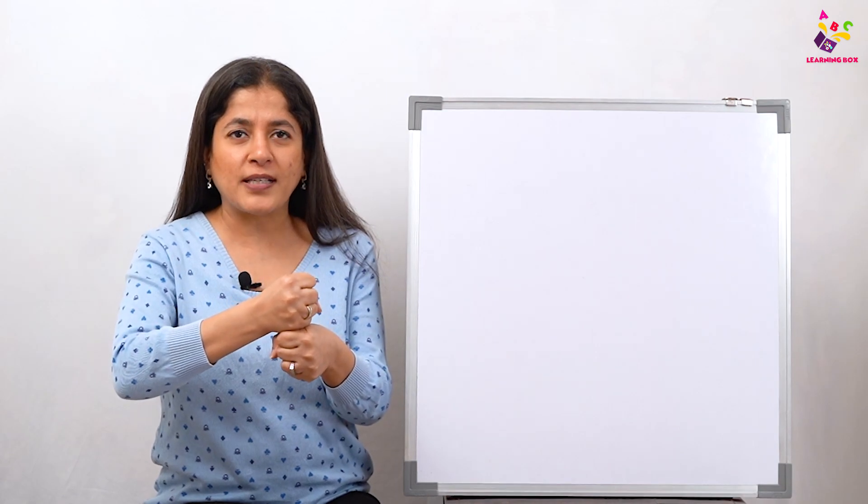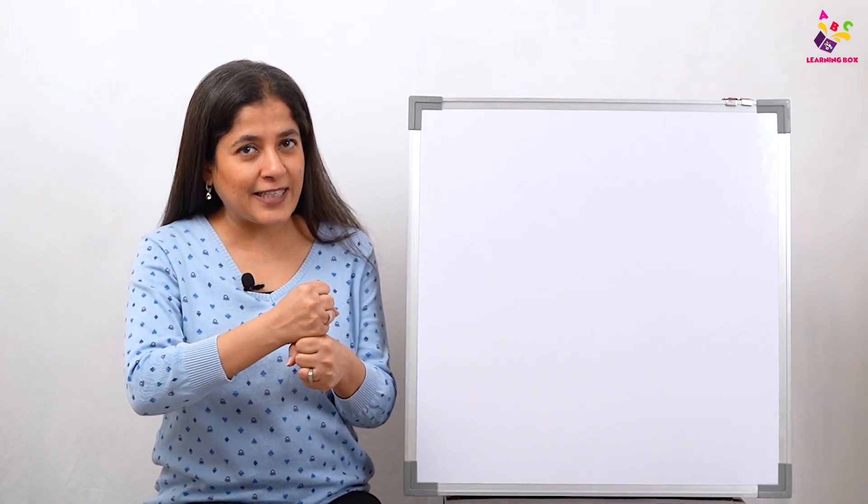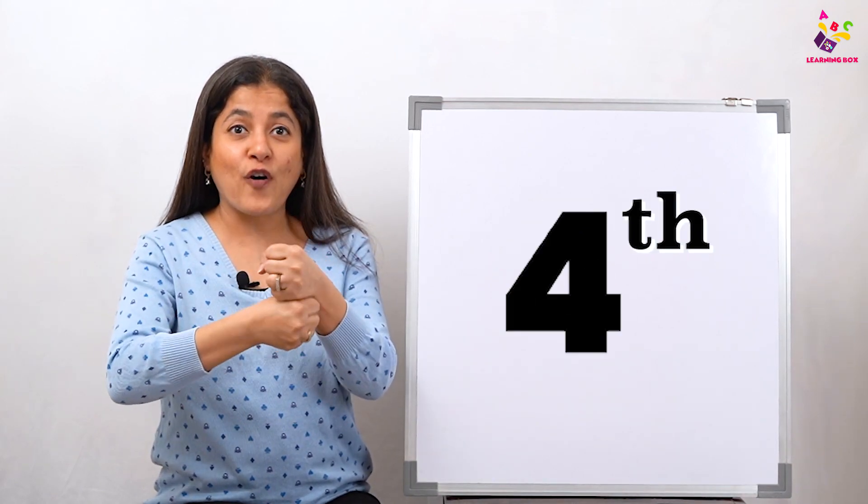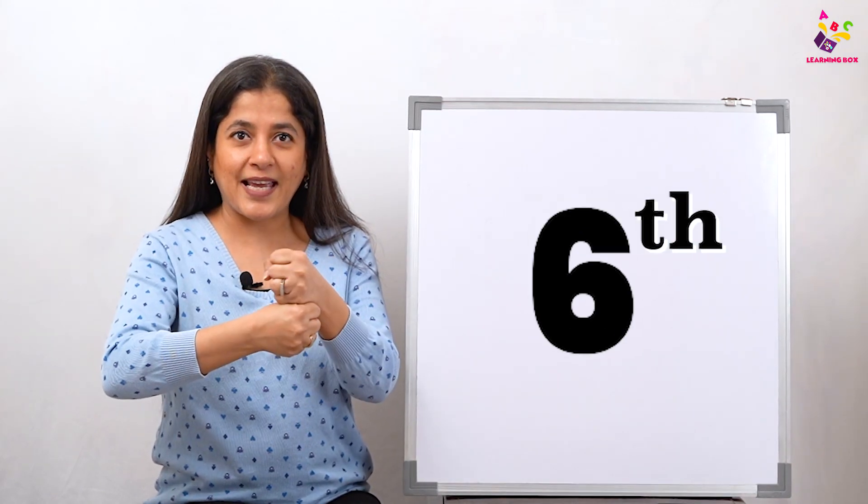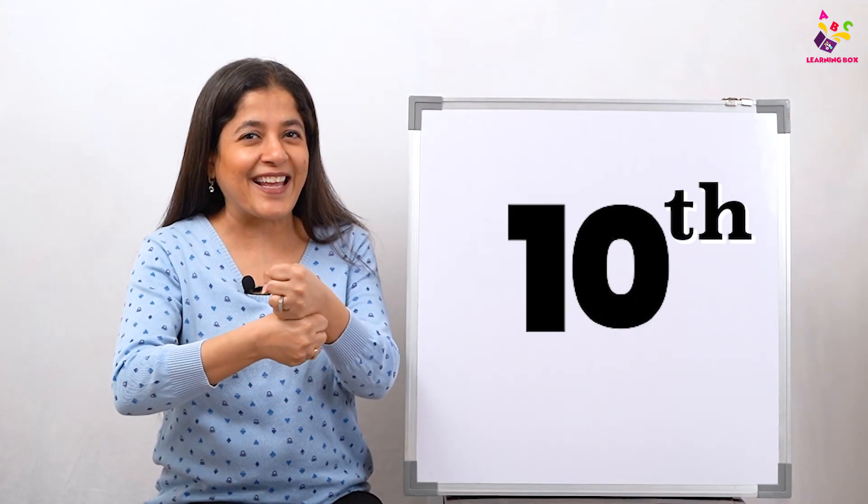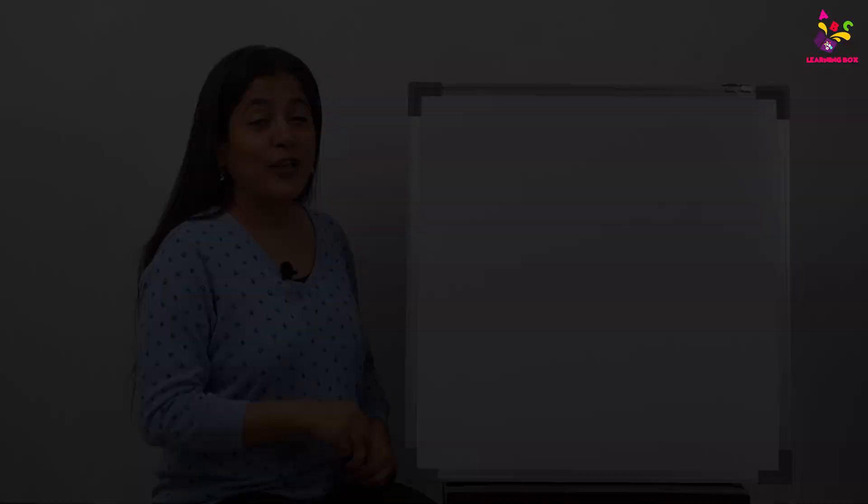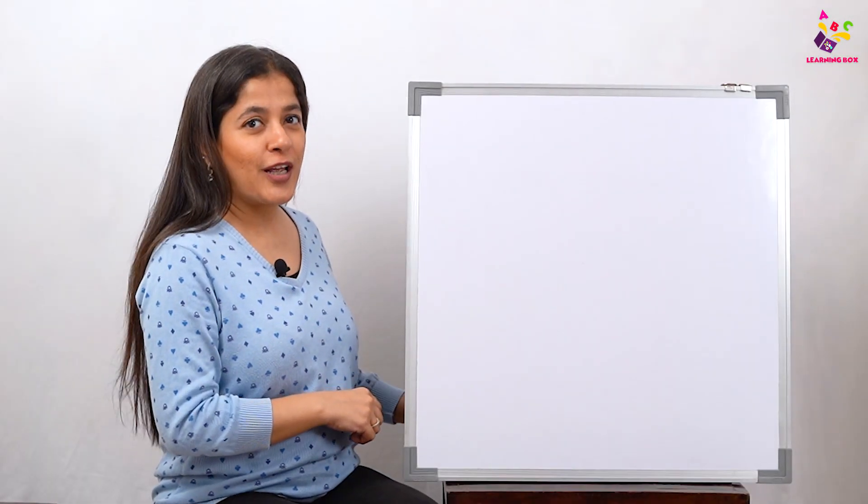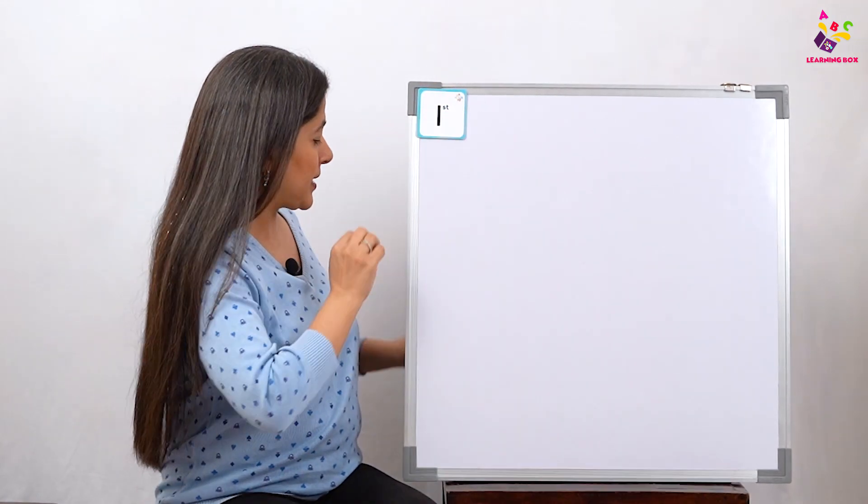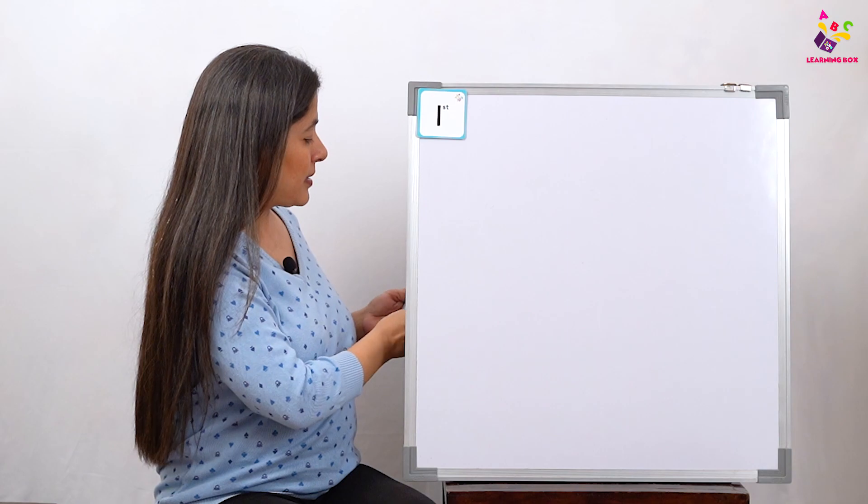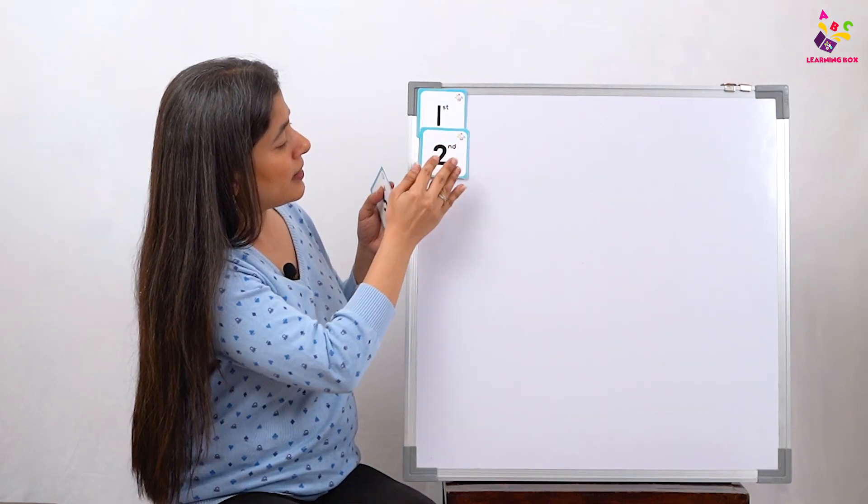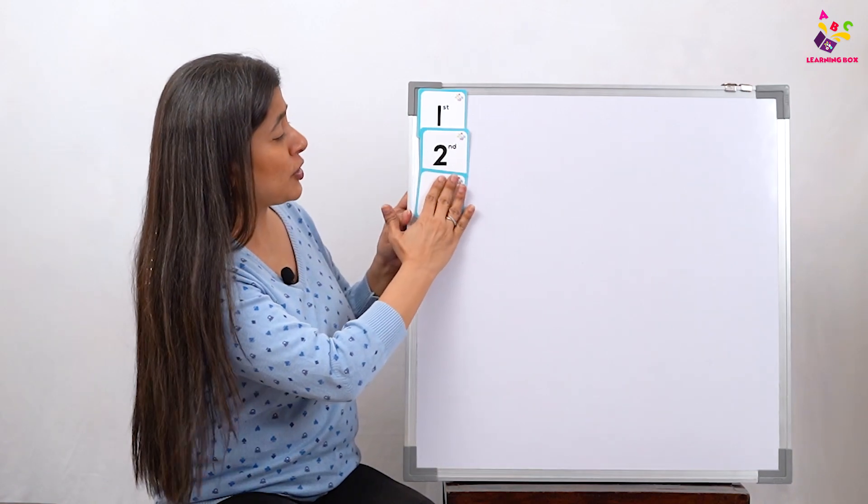First let's make our blocks and count our ordinal numbers. Let's start: first, second, third, fourth, fifth, sixth, seventh, eighth, ninth, and tenth. I'm going to show you all the ordinal numbers. You'll all have to count with me.